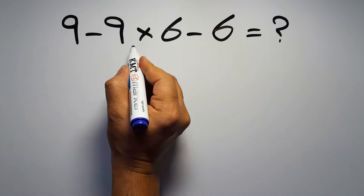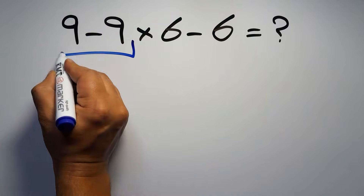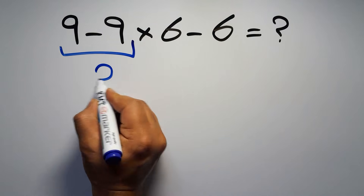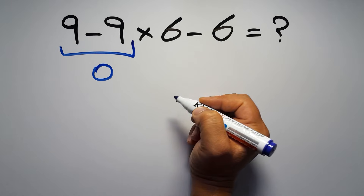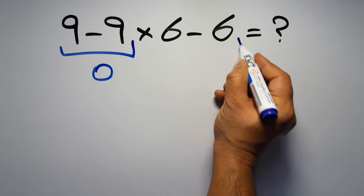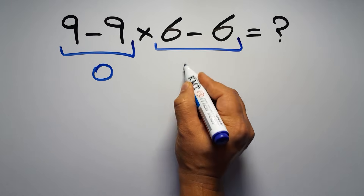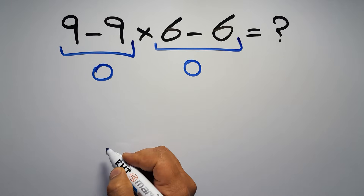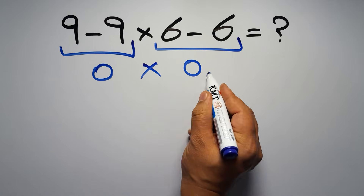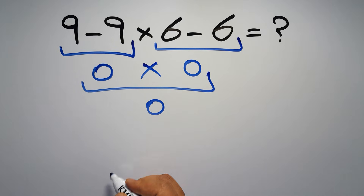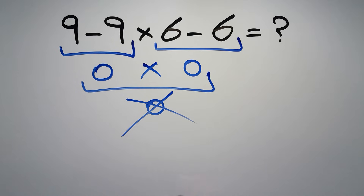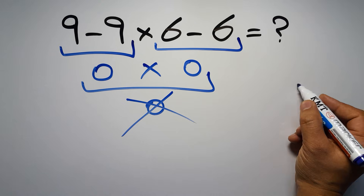9 minus 9 gives us 0, and here we have 6 minus 6 which equals 0, so 0 times 0 gives us 0. But this answer is not correct, because according to the order of operations, first we have to follow the proper rules.